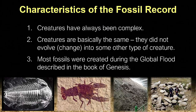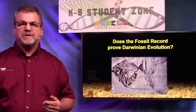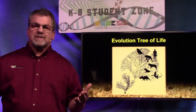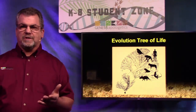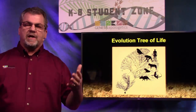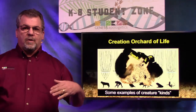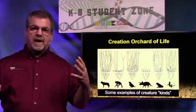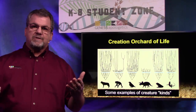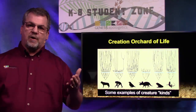The characteristics of the fossil record: creatures have always been complex; creatures are basically the same — they did not evolve from one kind to another; and most fossils were created during the global flood described in Genesis. Does the fossil record prove Darwinian evolution? No, it doesn't. Natural selection, adaptation, and genetic variation are a fact. But the idea that all creatures evolved from a single-celled life form over millions of years is really a philosophy that requires a lot of faith — it is not based on good science. What we see is what God said: He created everything according to its kind, and gave creatures the ability to adapt to their environment.